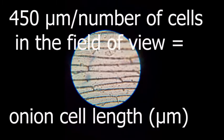Using the formula: 450 micrometers divided by the number of cells in the field of view equals the length of one onion cell in micrometers.